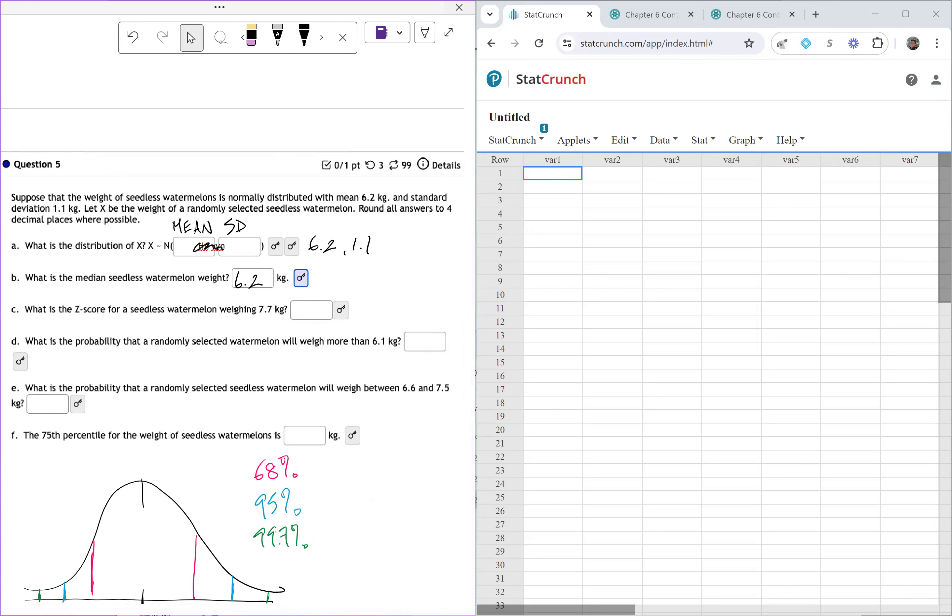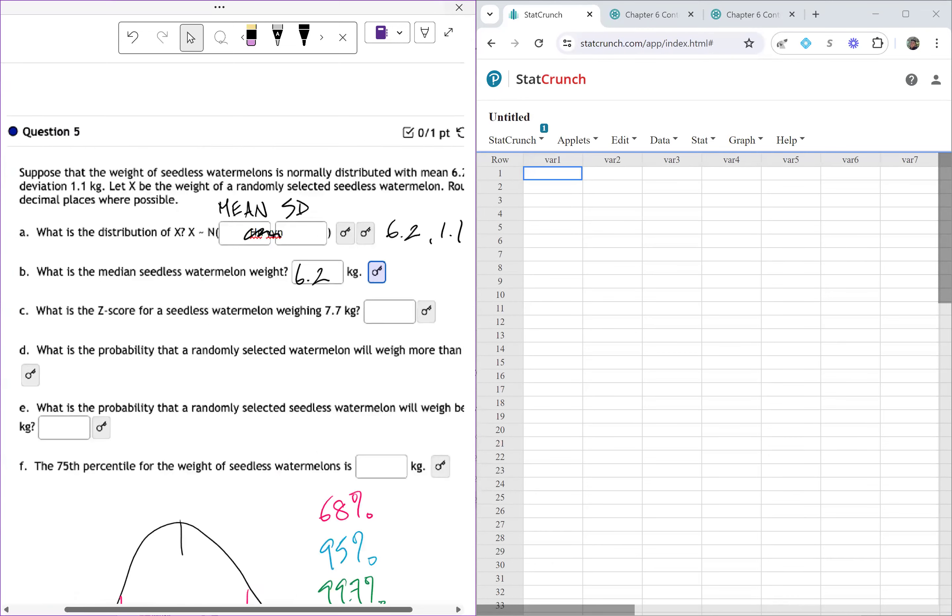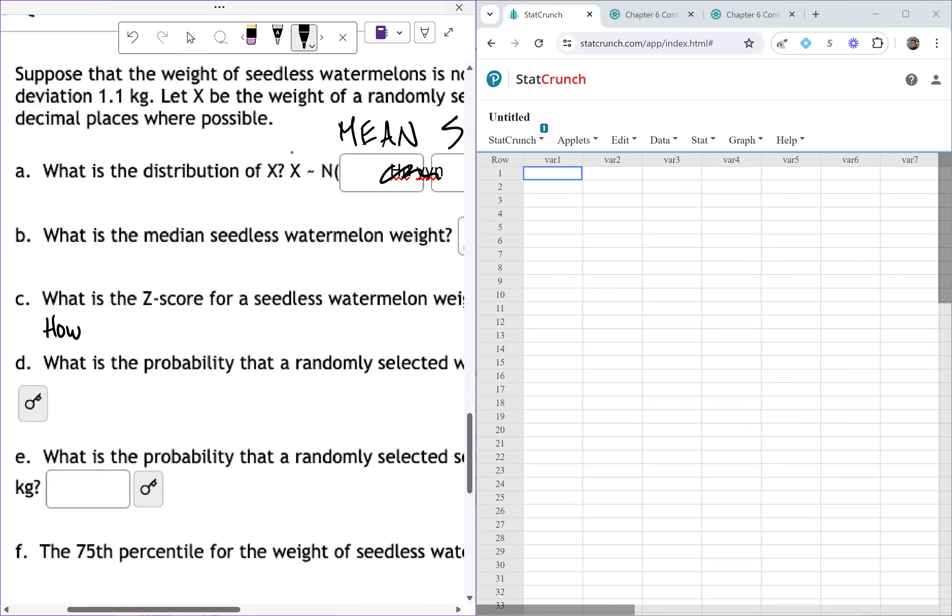Part C, what is the Z score for a seedless watermelon weighing 7.7 kilogram. Now, I know there's a lot of terminology, but a Z score at the end of the day really just means how many standard deviations from the mean is that data point. So it's like, how many standard deviations? Is it one standard deviation away? Is it two standard deviations away? Is it three standard deviations away? Or is it like 1.7 standard deviations? So it doesn't have to be a whole standard deviation. It might be somewhere in between there.